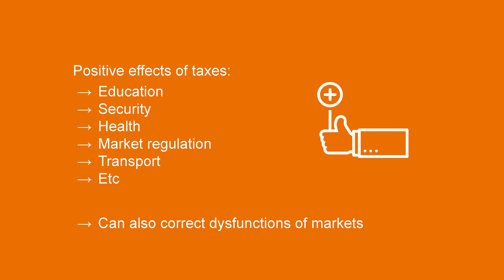The positive effects of taxes correspond to any positive policy implemented by the state. In general, the state will spend taxes on education, security, health, market regulation, transport, etc. Taxes can also have positive effects not in the way they are spent, but through their impact on the taxed agent or market. For instance, taxing cigarettes has the aim of diminishing the number of consumers buying cigarettes, which may be considered a positive effect in itself, indifferent to the question of how this money is spent by the state.